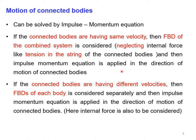First identify the direction of motion of the connected bodies. When they have the same velocity, take the FBD of the combined system and apply the impulse-momentum equation. If the connected bodies move with different velocities, draw the FBD of each body separately and apply the impulse-momentum equation for each, accounting for tension in strings or cables.